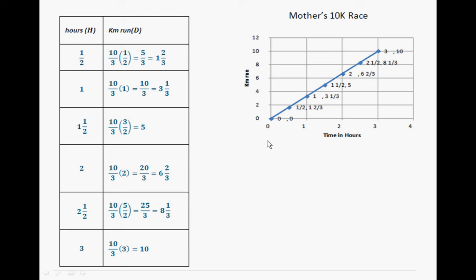When you're graphing them, one half would be approximately here, or a point here. And that point corresponds with 1 and 2/3 on the y axis. One would be 3 and 1/3. One and a half would be 5. Two would be 6 and 2/3. Two and a half would be 8 and 1/3. And three would equal 10. And that is the only point that falls on an actual grid line.